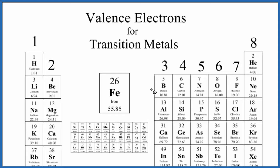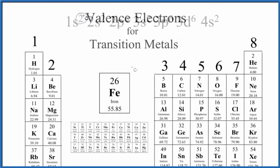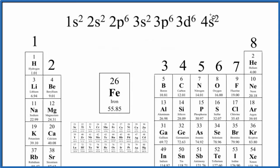So let's do an example. Let's look at iron — find the valence electrons for iron. The best way to do this is to look at the electron configuration for iron. If you need help finding electron configurations, there are links in the description. So this is the electron configuration for iron. If we add up all of these electrons, we'll get 26.